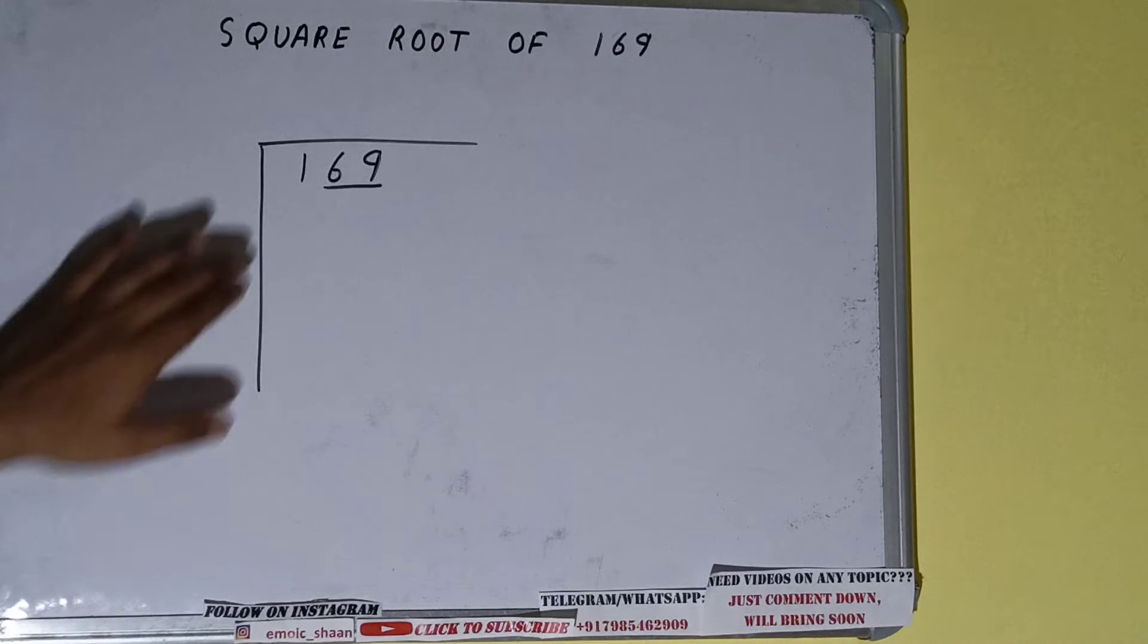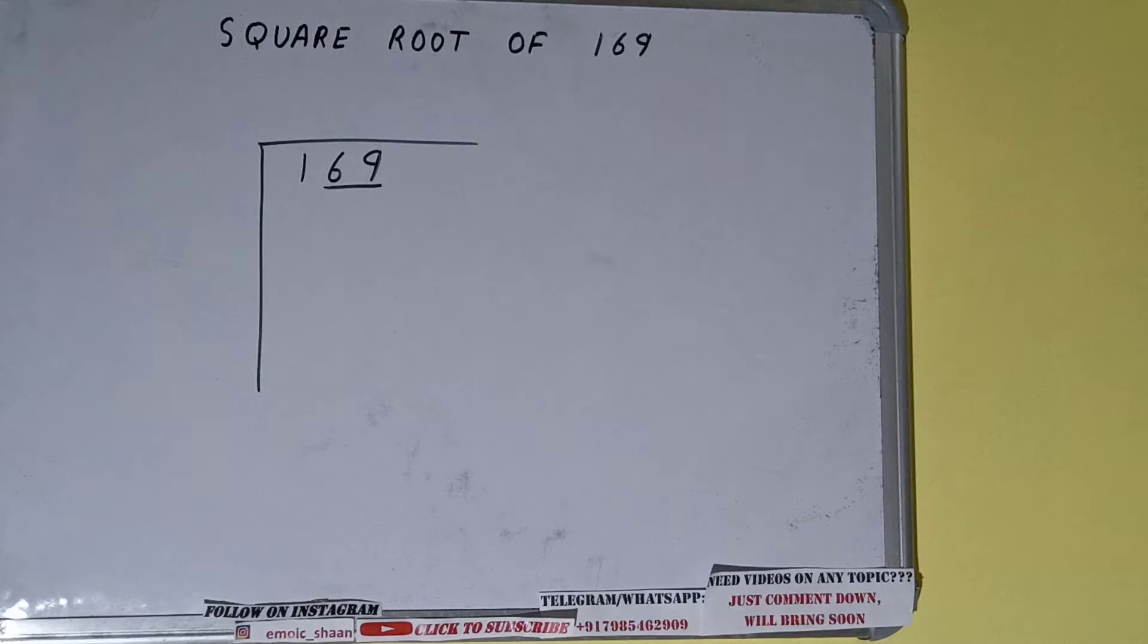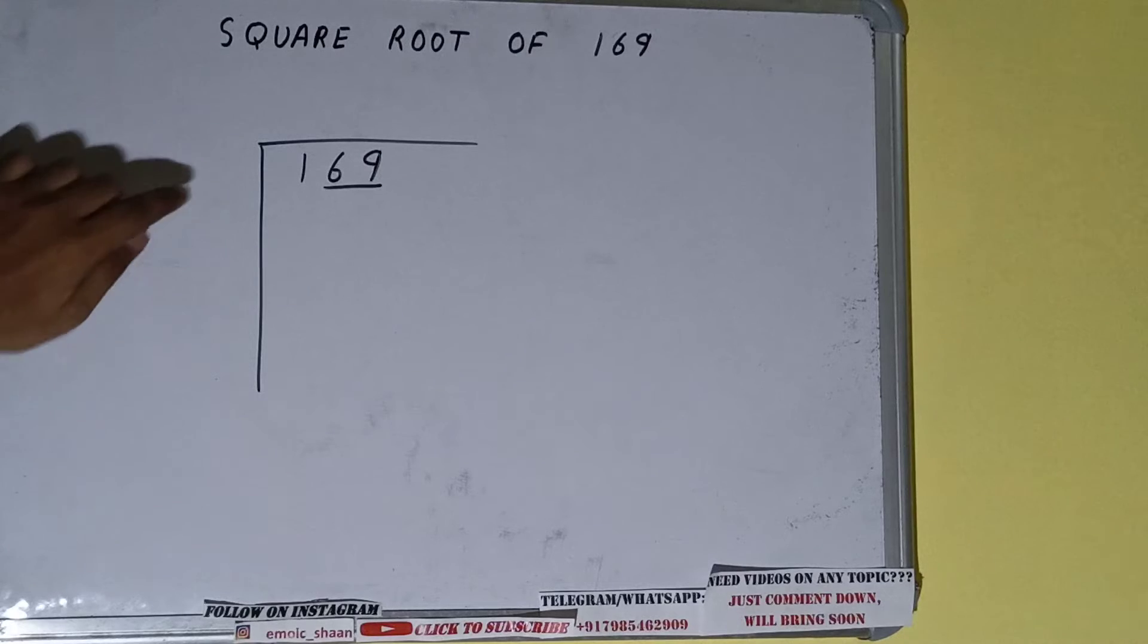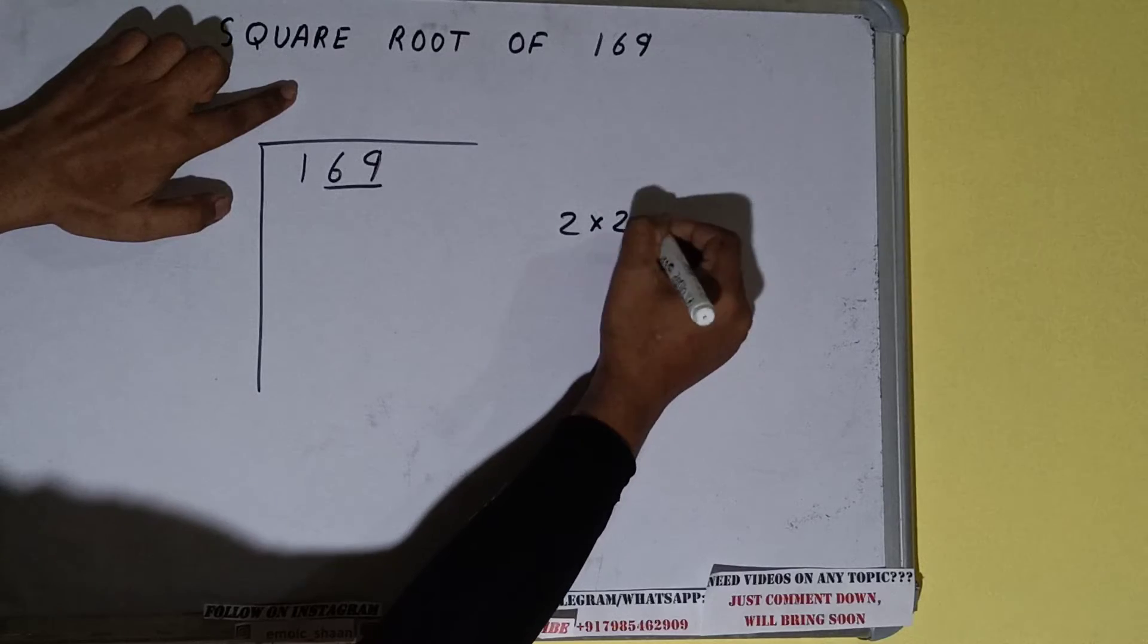So first we'll divide this one and then we'll bring down the pair. The rule is whatever number we write here we have to write here also. So if we write 2 here and 2 here we'll get 4 which is greater than 1 so we cannot use it.